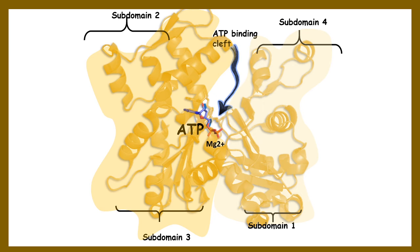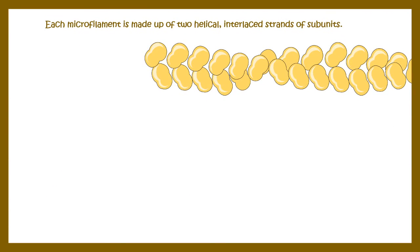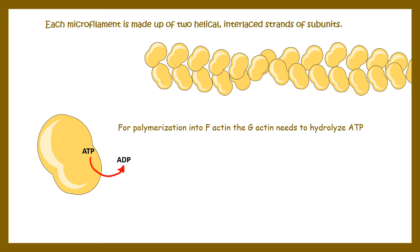Each microfilament is made up of two helical intercoiled strands of subunits. For polymerization, ADP is converted to ATP — this exchange is important for the monomer to be recruited into the growing strand of microfilament.